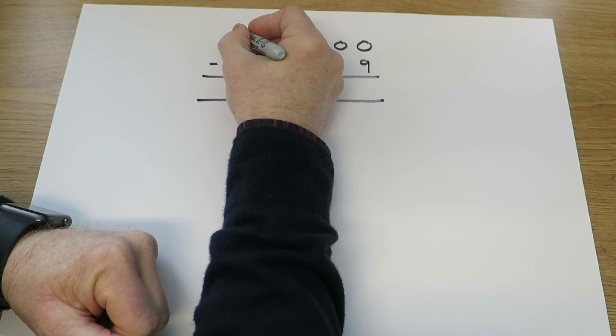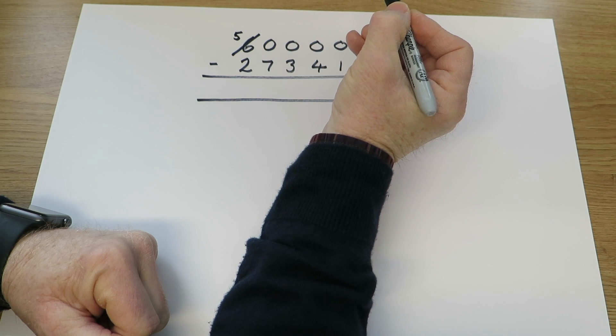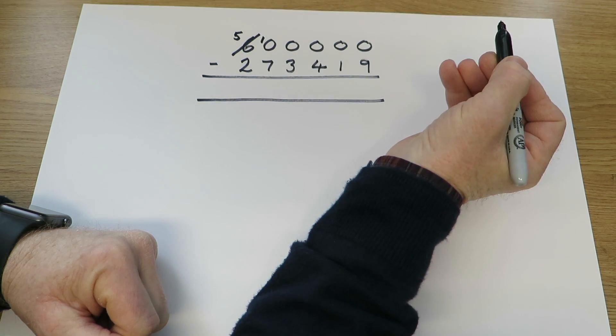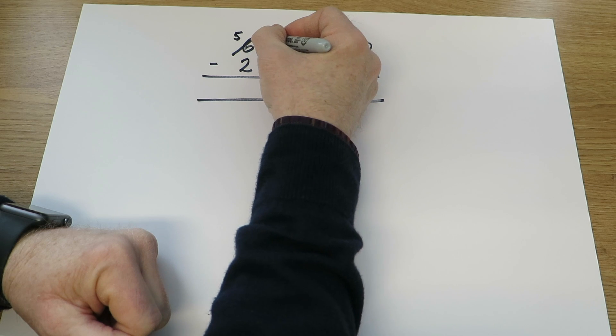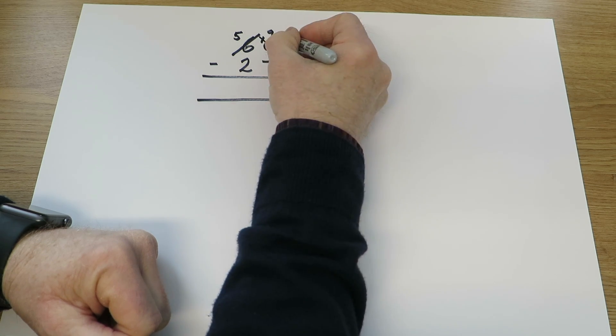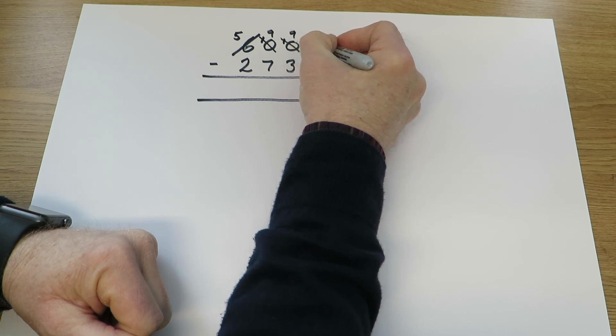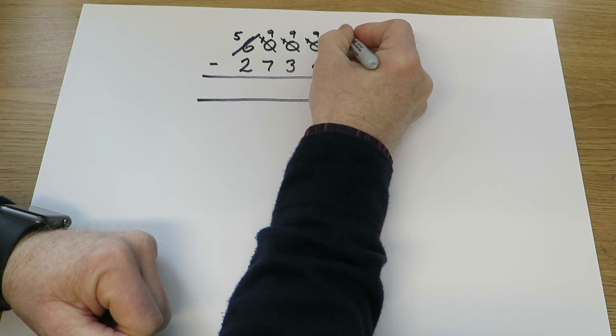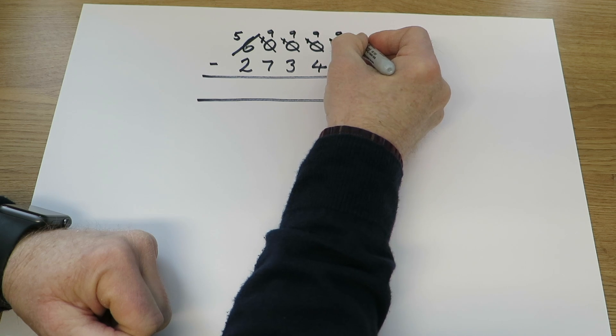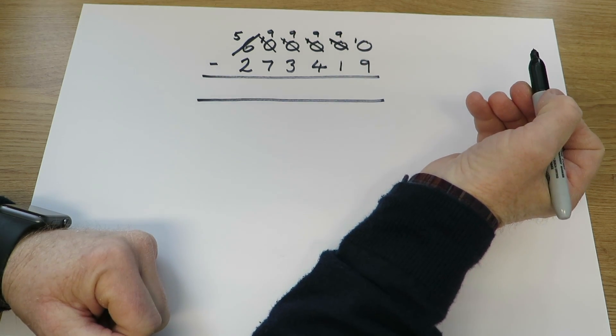Using one of the 100 thousands leaves us with 500 thousands. That gives us 10 for that column, so that's 10 in the 10 thousands. Use one of those leaves us 9, gives us 10 there. Use one of those leaves 9, 10, 9. 10 tens leaves 9 tens, gives us the 10 units. Then the question is remarkably simple.